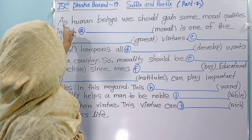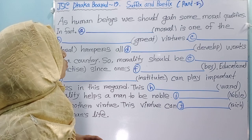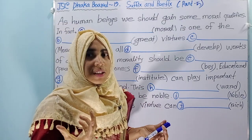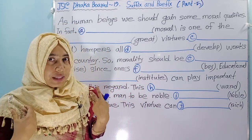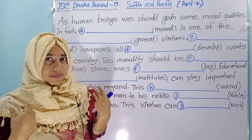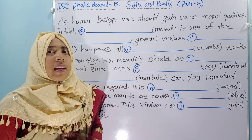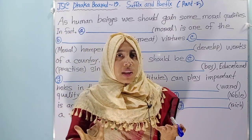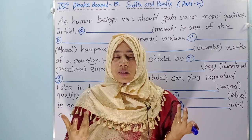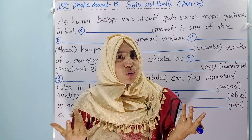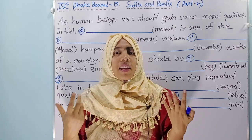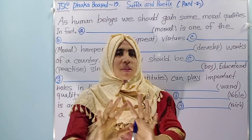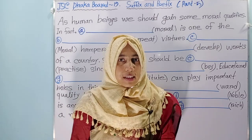Here you see: as human beings, we should gain some moral qualities. We are human beings, so we have to gain some moral qualities — like morality, like honesty, like integrity, and so on.